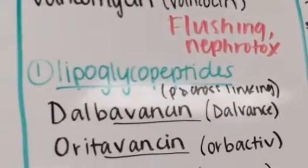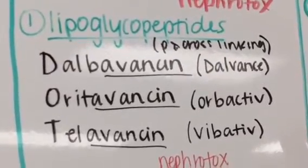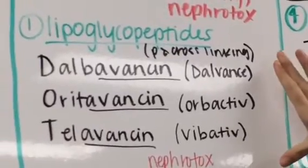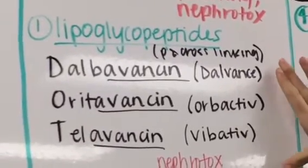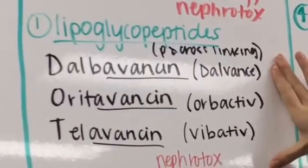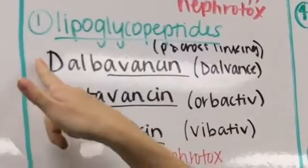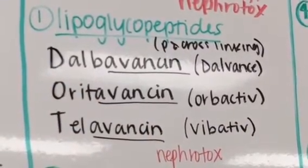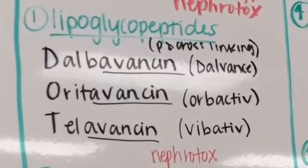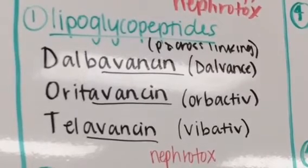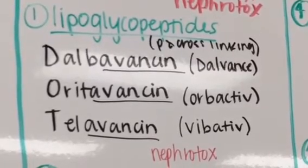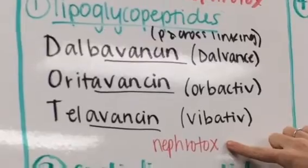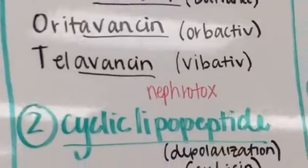The last cell wall synthesis medications are the lipoglycopeptides, which are the '-avancins.' I remember these because they spell out DOT: dalbavancin, oritavancin, and televancin. Again, we're going to worry about nephrotoxicity with these medications as well.